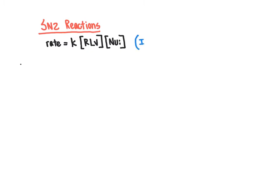What this implies about the reaction is that the slowest step of the mechanism directly involves both the electrophile and the nucleophile. The rate of the overall reaction is determined only by the slowest step of the mechanism. What goes into the rate equation is going to be only those molecules that are present at the slowest step — the bottleneck step. So the rate here is determined by the slowest step of the mechanism.